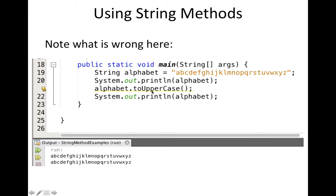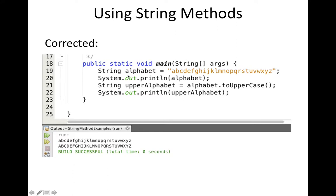So let's look at how this is supposed to work. The corrected version looks like this. Again, we create the string reference variable called alphabet, put the letters in it, and print it out. Now we create a second string reference variable called upperAlphabet, and it captures the return value. We call the toUpperCase method on the alphabet object — this creates a new string which is all uppercase, returns it, and that gets assigned to upperAlphabet. So when we print out upperAlphabet, we see it's all capitalized, while alphabet is still lowercase.